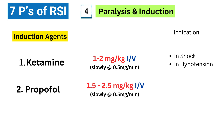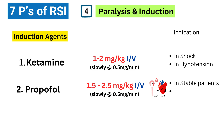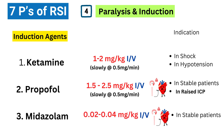Propofol works really fast, but it can cause a significant drop in blood pressure. We tend to reserve it for patients who are hemodynamically stable — meaning their blood pressure is good — or in specific situations like when we need to lower pressure inside the skull or stop seizures quickly. Midazolam is another sedative, but it can also lower blood pressure, so it's generally not our first choice for RSI, especially in emergency situations.